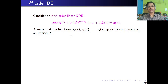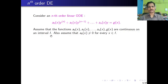We assume that all the coefficient functions a₀(x), a₁(x), ..., aₙ(x), g(x) are continuous on the interval I. We also assume that a₀(x) is not equal to 0 for all x in I — otherwise the order would be lesser than n.